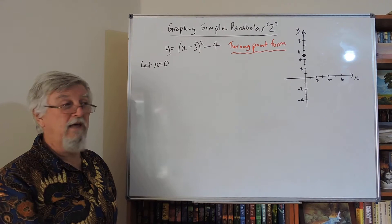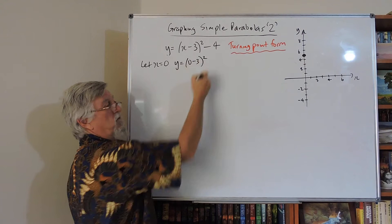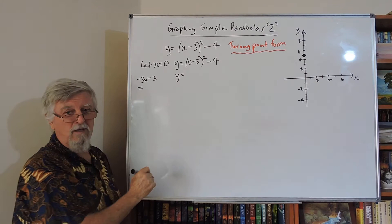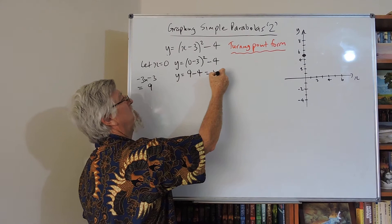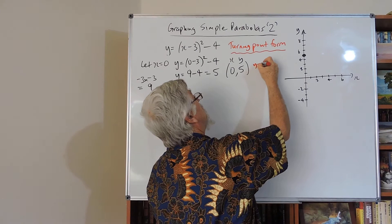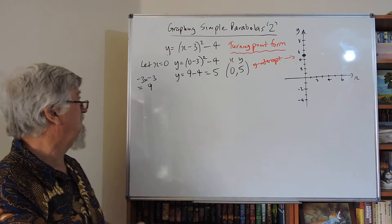Basics. If we let x equal 0, what do we get? We get the y-intercept. So I'm going to get y equals 0 take 3 squared and take the 4. What do I end up with? Negative 3, when I square it, is negative 3 times negative 3. Be careful. It's a positive 9. So I end up with a 9, take 4, which is 5. So I put in 0 for x and I got 5 for y. So that's called the y-intercept. So there it is over here on my diagram at 5.